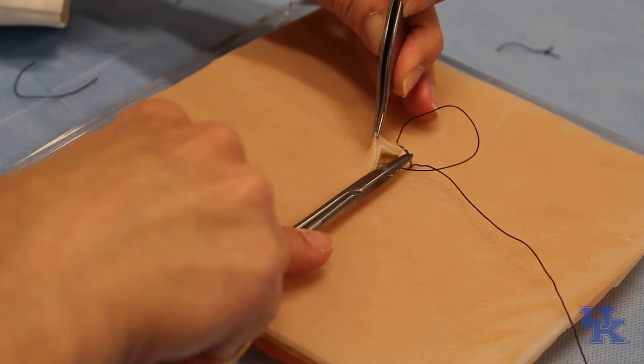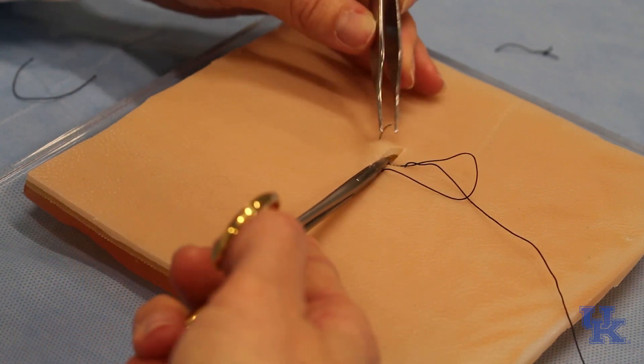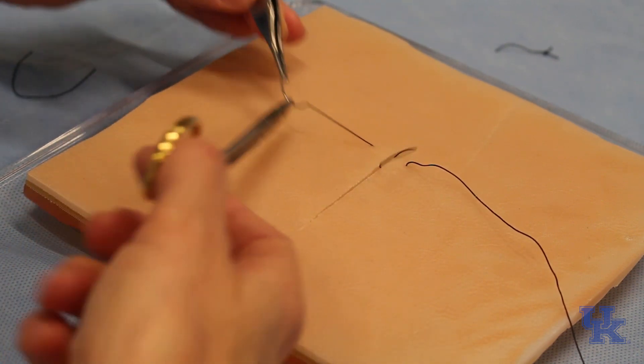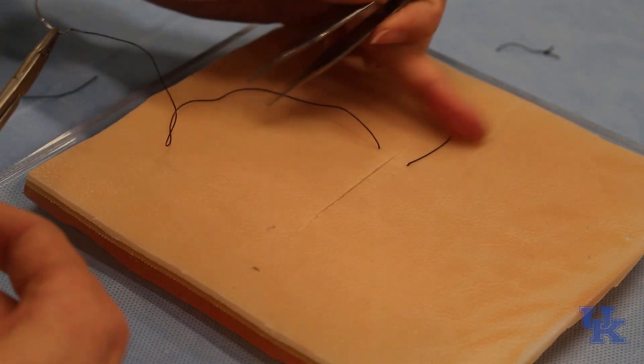Go in one side, come out the other, use the curve of your needle and depending on the size of your incision where you're located will determine how far away you are from skin edge.